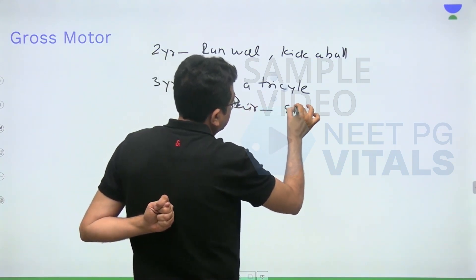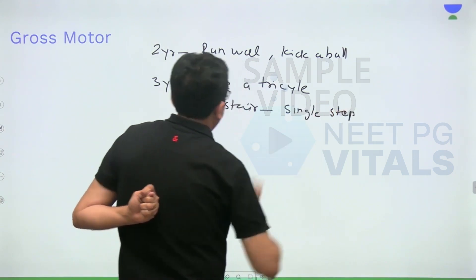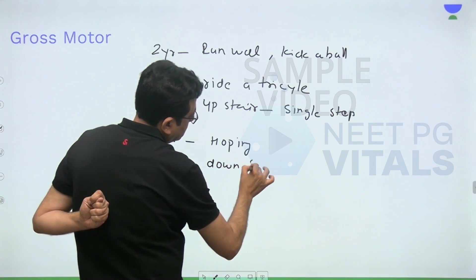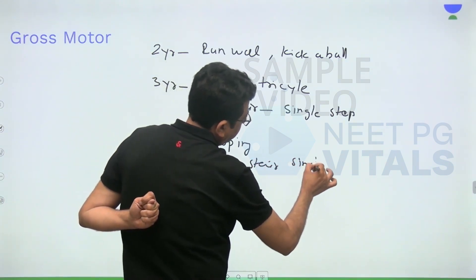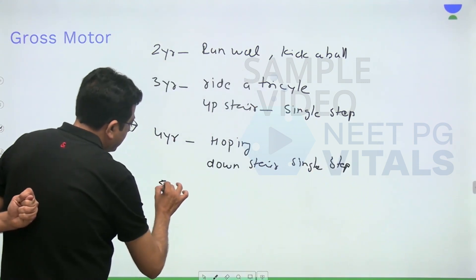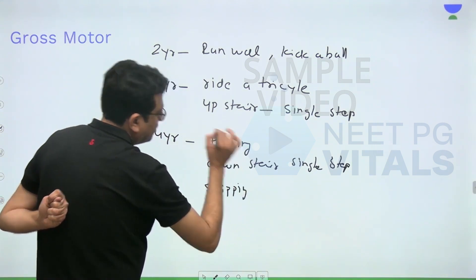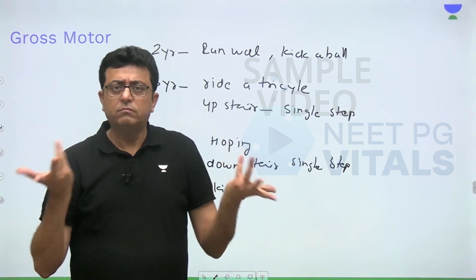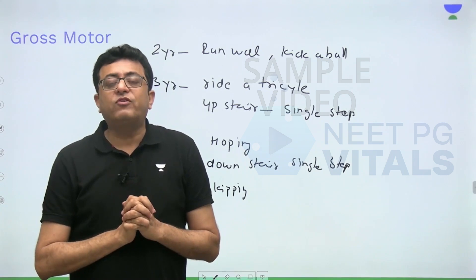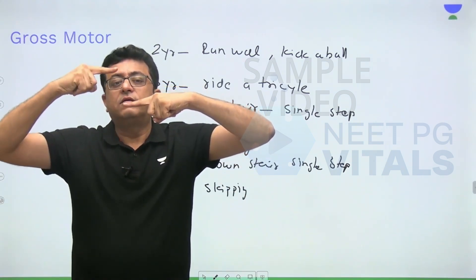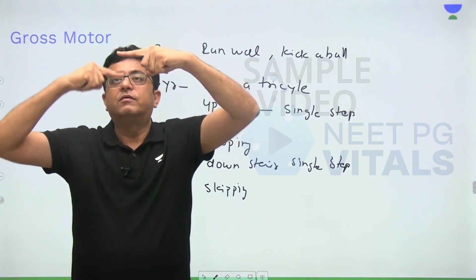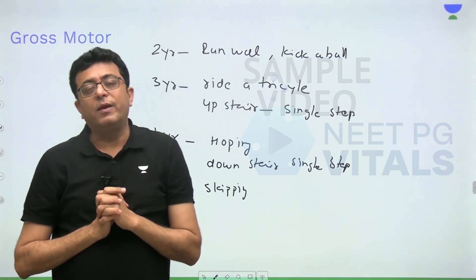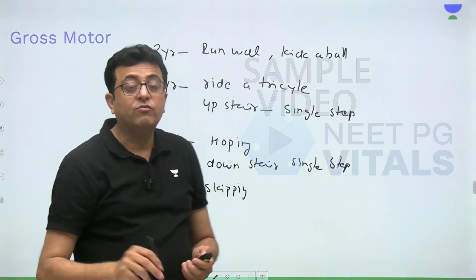At four years: up stairs with a single step and hopping. At five years: skipping. Let me clarify the stair milestones. At two years the child uses two steps per stair — both feet land on the same step before moving to the next. At three years the child goes up stairs with a single step — alternating feet. At four years, down stairs with a single step. At four years, hopping. At five years, skipping.